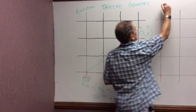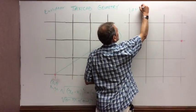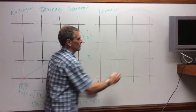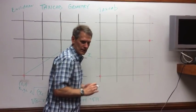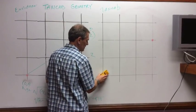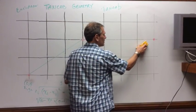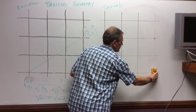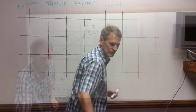So what do we do with Taxi Cab Geometry? We've got our same two points here. How are we going to find the distance between these points using Taxi Cab? Remember, Taxi Cab can't go diagonally.